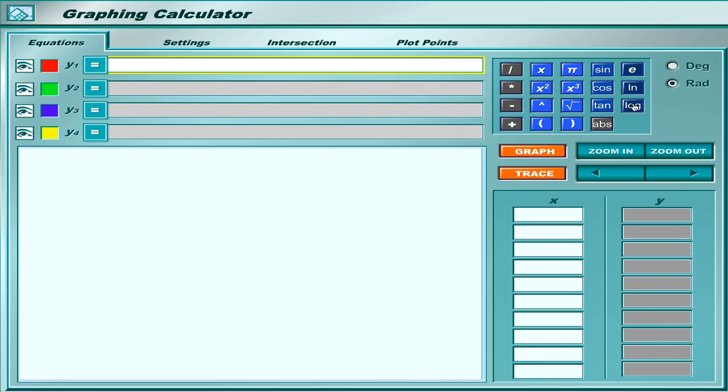To the right, there's a calculator with an area with variables, and then down below is our graph button right here. You'll click that graph button when you're ready to actually graph your equation. We have some zoom buttons, trace, and then there are x's and y's on the far right.